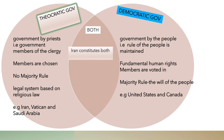I've put together a Venn diagram to show you the differences. On the left-hand side, as you can see, is the theocratic government — and some of this information comes from a dictionary. A theocratic government is a government run by priests, that is, run by members of the clergy. Members are chosen, not voted in. There is no majority rule, and the legal system is based on religious law.